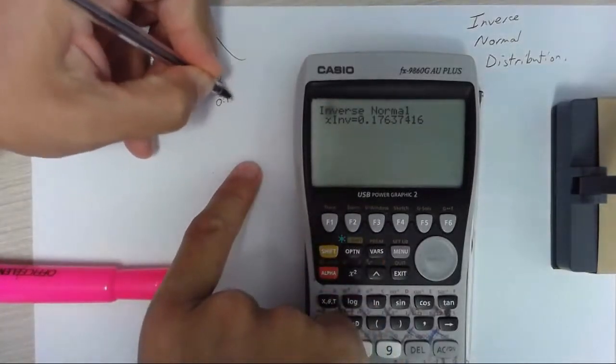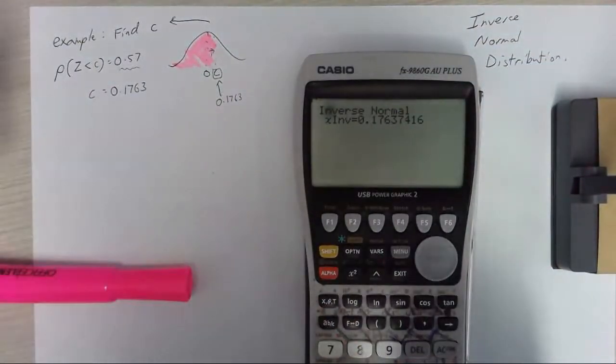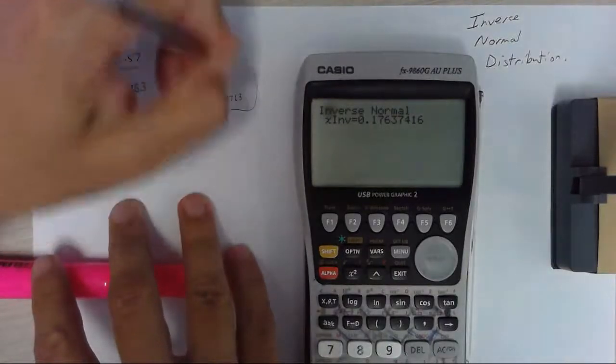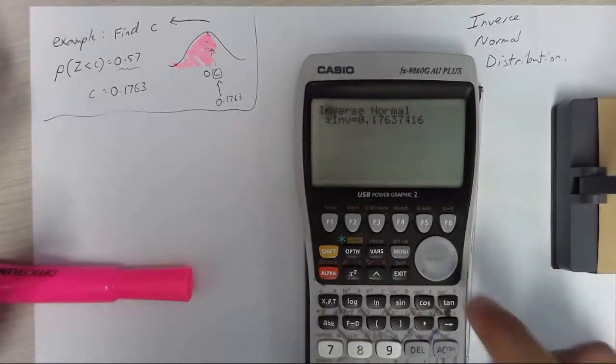0.1763. Now this is the inverse normal distribution so this is not part of the question but you could check that if you are going to go back to it. So we're going to go back to our stat menu, back to our distribution and normal distribution and normal cd.